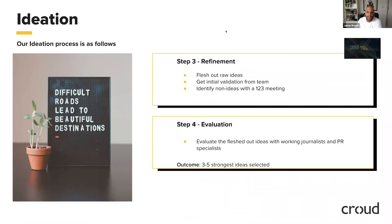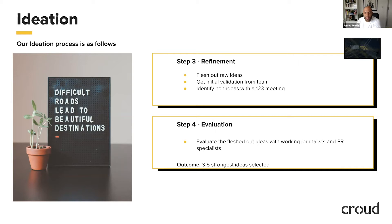Step three is the refinement phase, where we flesh out raw ideas, get initial validation from the team, and identify non-ideas through a one-two-three meeting. In a one-two-three meeting, everyone involved in the ideation pitches their ideas and we grade them: one being a really good idea, two being okay, and three being an idea that's not going to work — allowing us to eliminate ideas that aren't up to scratch. Step four is the evaluation phase, where we take the remaining ideas, talk to working journalists and PR specialists, and refine the idea accordingly so we know it will work for press.